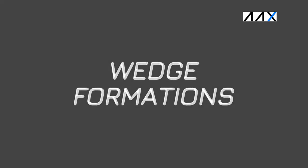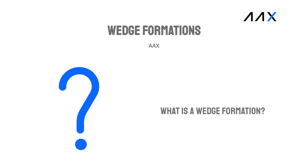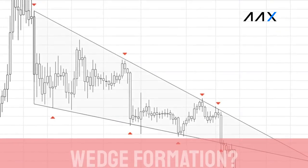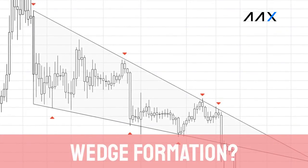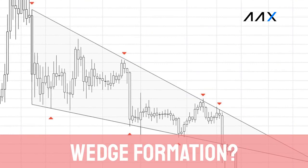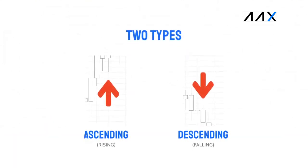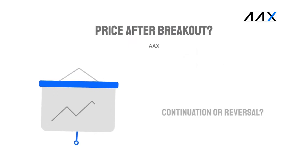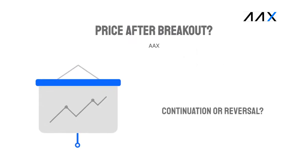Wedge Formations as a part of the AAX Academy. What is a wedge formation? A wedge is a formation of converging resistance and support lines. Wedge formations form regularly in the cryptocurrency market. They can indicate both reversal and the continuation of trends. In trading, there are two types of wedge formations: ascending and descending. Both can lead to the continuation and reversal of price, dependent on the breakout direction.